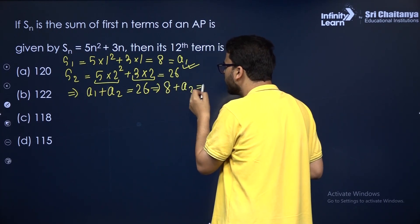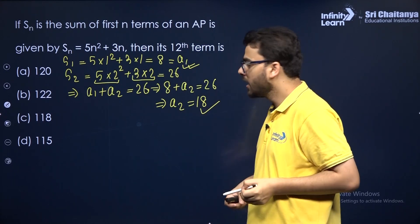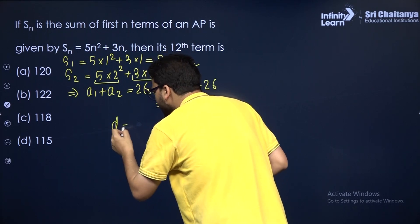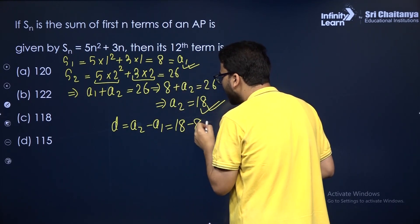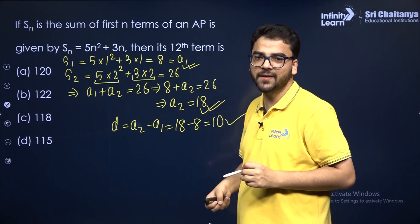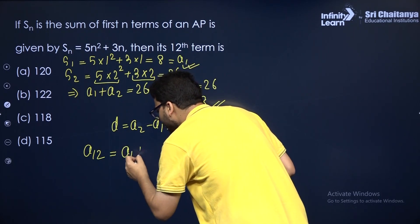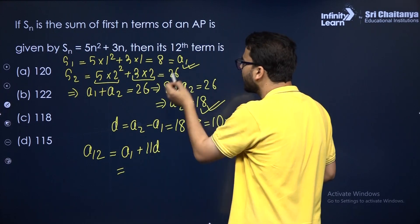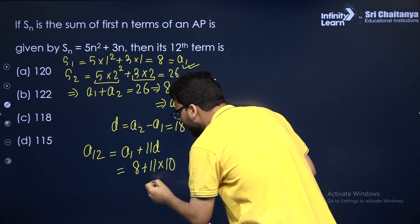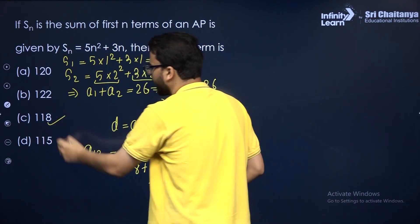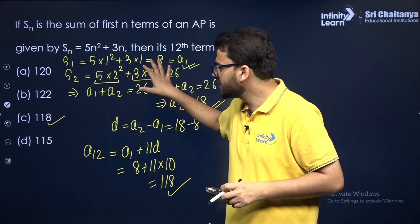So A2 = 18. The common difference D = A2 − A1 = 18 − 8 = 10. The 12th term is A12 = A1 + 11D = 8 + 11(10) = 8 + 110 = 118. This is a simpler method; there is another approach but this one is more straightforward.